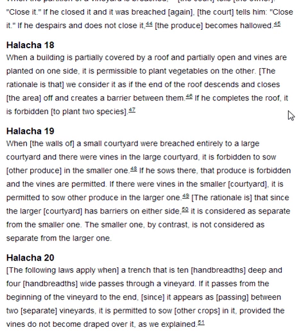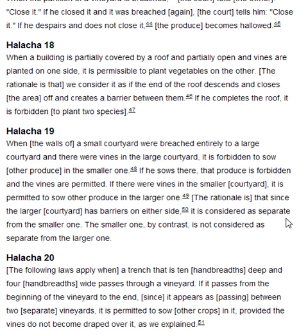If he completes the roof, it is forbidden to plant two species. Halakha 19. When the walls of a small courtyard were breached entirely to a large courtyard, and there were vines in the large courtyard, it is forbidden to sow other produce in the smaller one. If he sows there, that produce is forbidden and the vines are permitted. If there were vines in the smaller courtyard, it is permitted to sow other produce in the larger one. The rationale is that since the larger courtyard has barriers on either side, it is considered as separate from the smaller one. The smaller one, by contrast, is not considered as separate from the larger one.